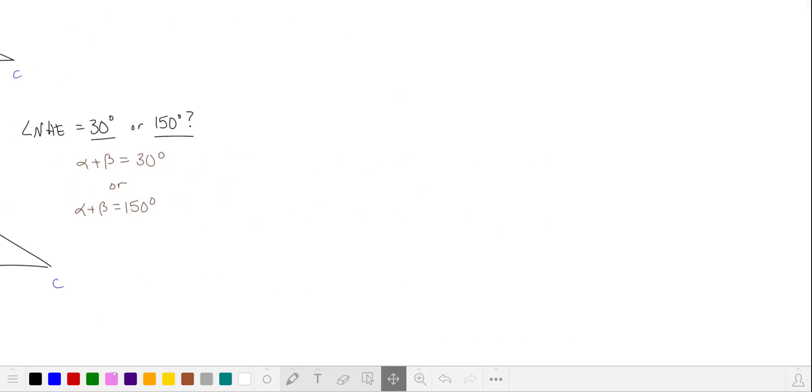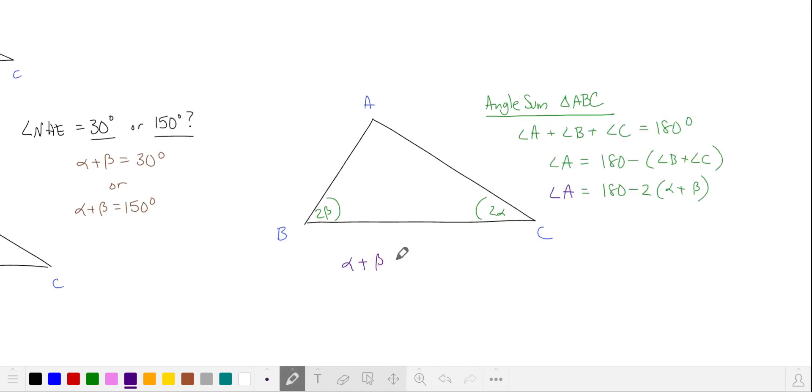Let's take another look at triangle ABC. Recall these angles were 2 beta and 2 alpha. Looking at the angle sum of triangle ABC, if alpha plus beta is equal to 150 degrees, then angle A is negative. But if alpha plus beta is 30 degrees, this means angle A is 120 degrees.